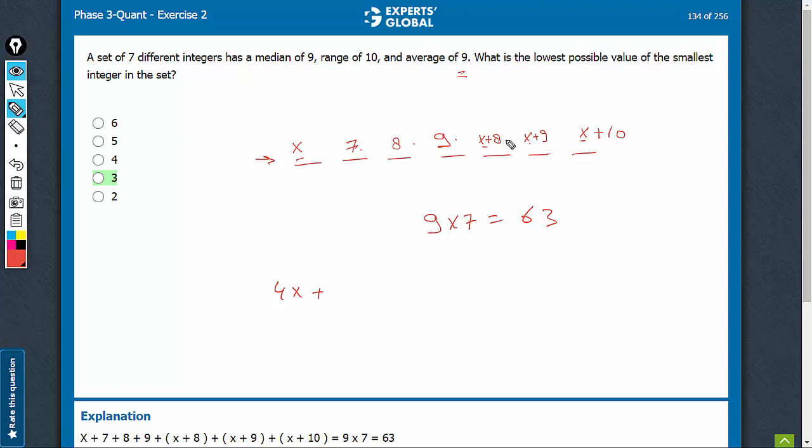15, 24, 32, 41, 51, 4x plus 51 equals 63.